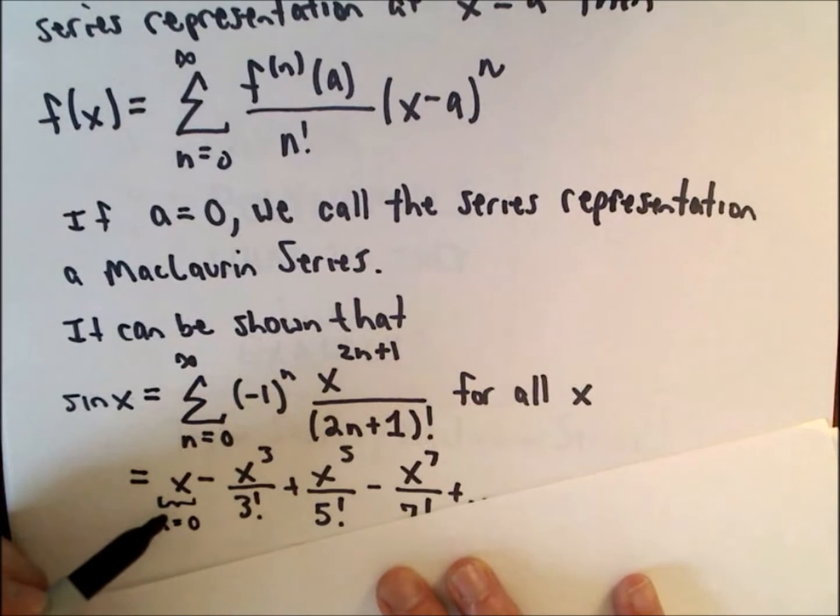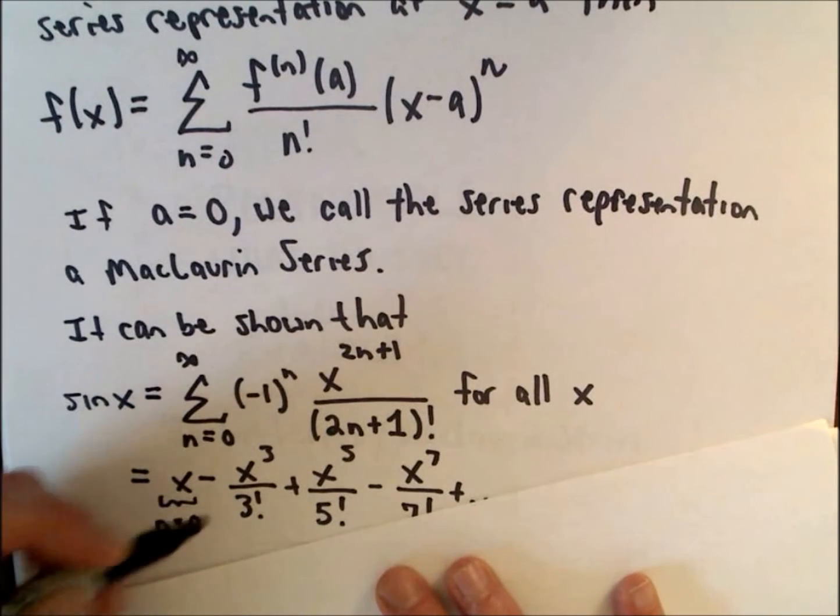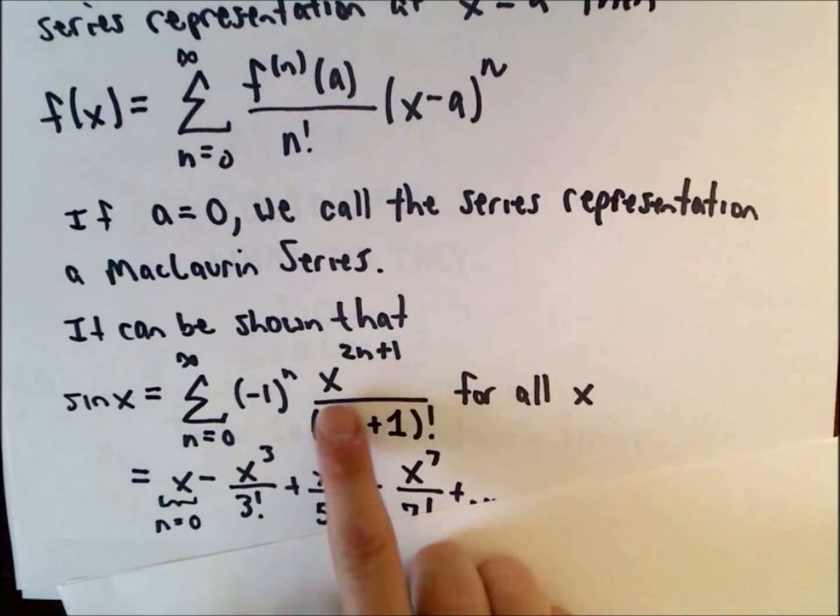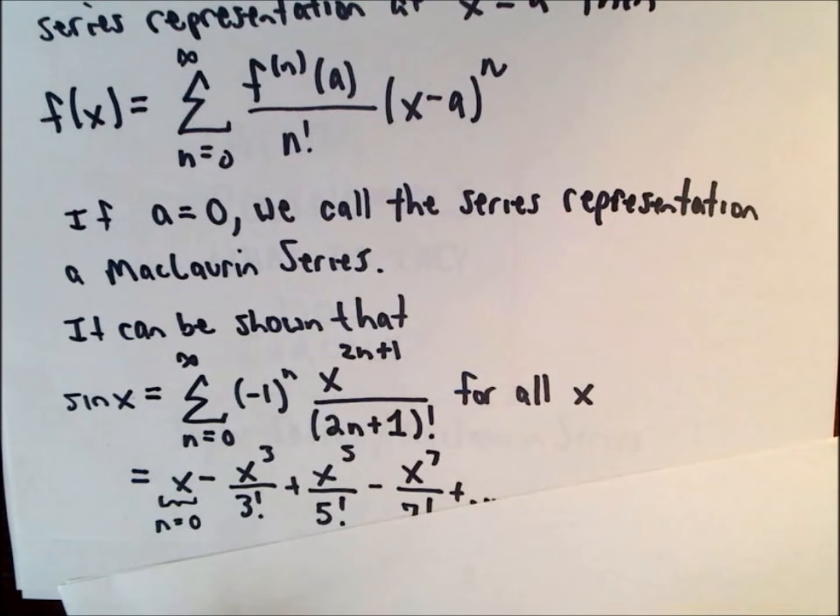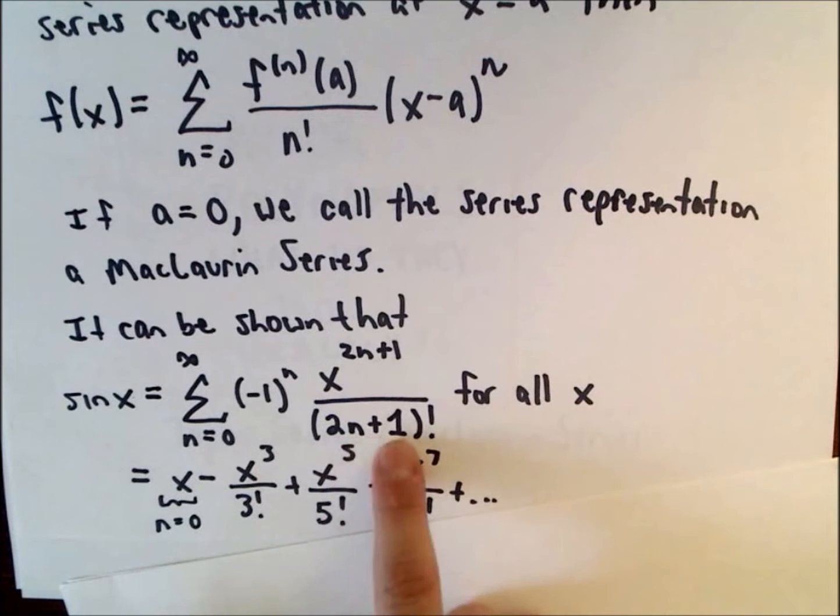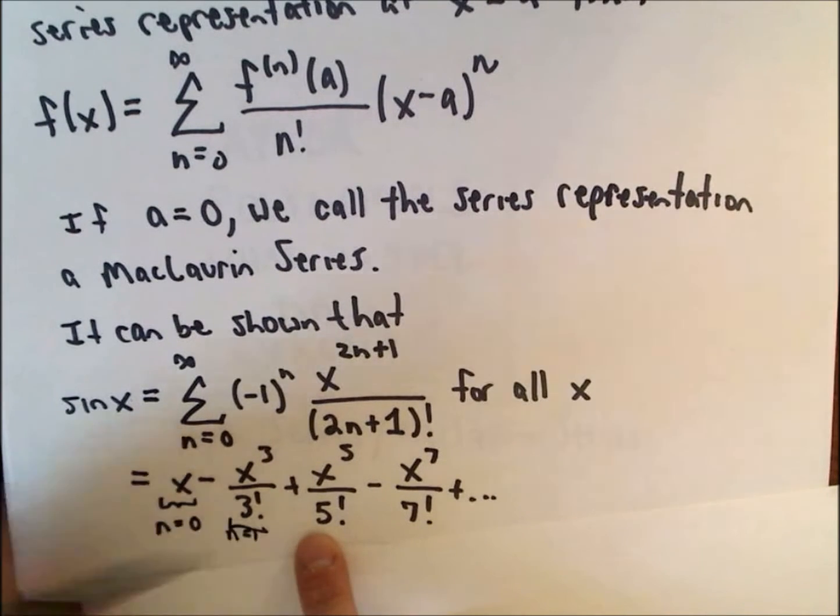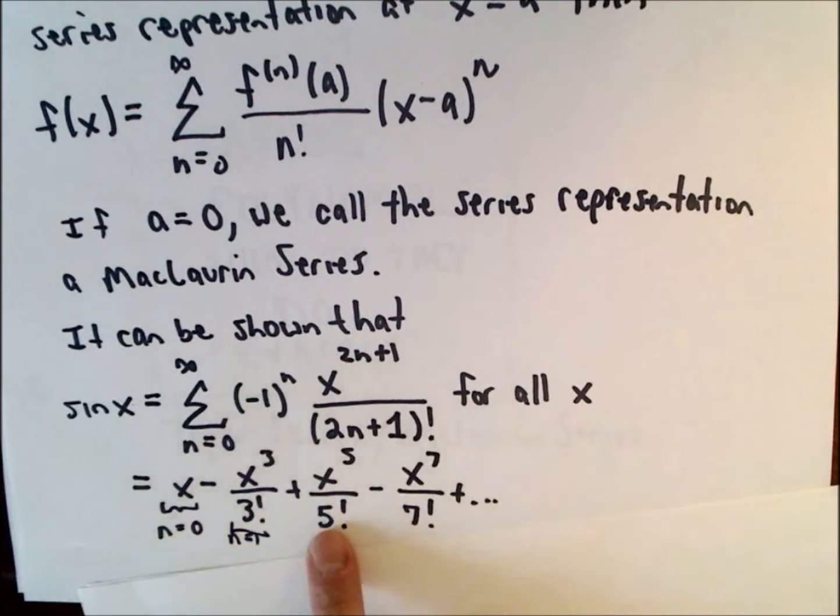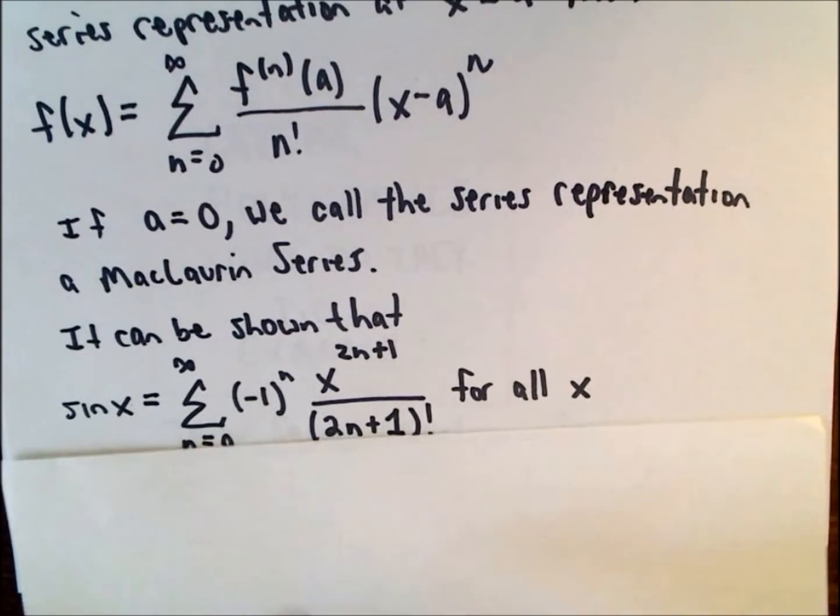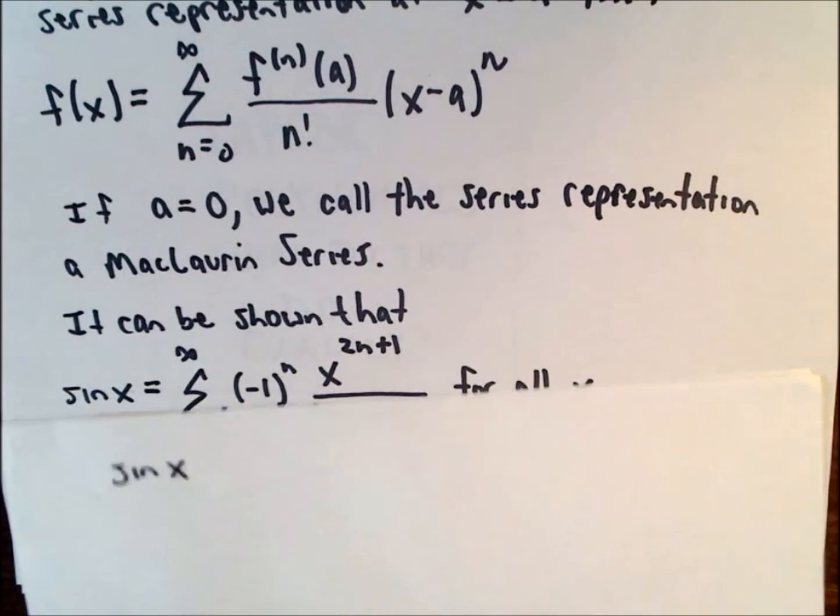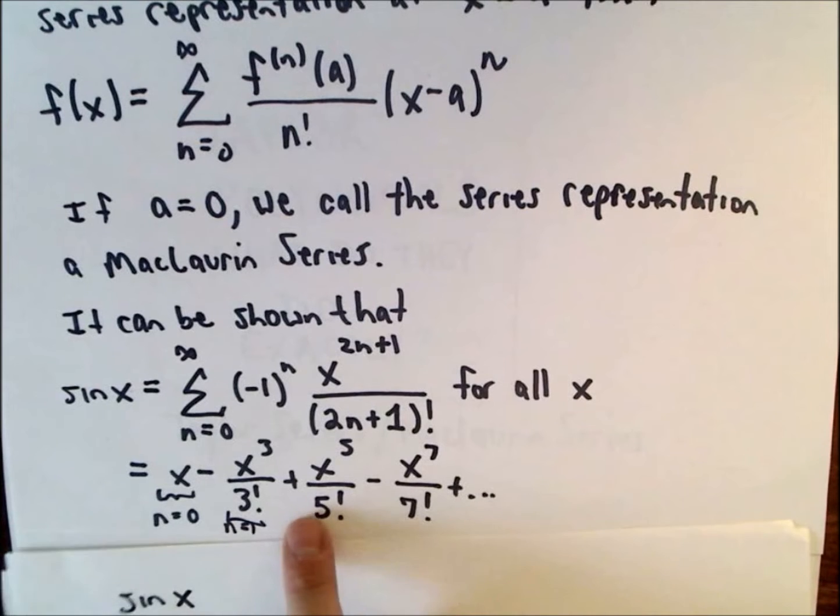If you plug in n equals one, notice you would have a negative. There's our negative. If you plug in n equals one, you'll get x to the third power over three factorial. So this is going to be our term when we let n equals one. The next term you'll get when you plug in n equals two, n equals three, et cetera, et cetera.